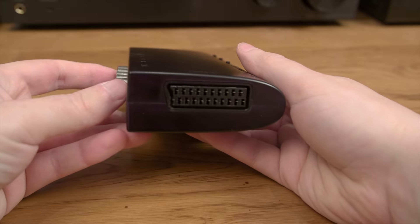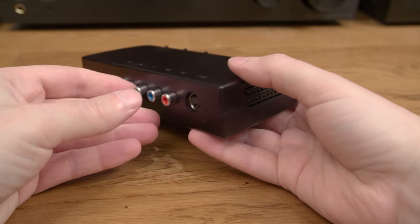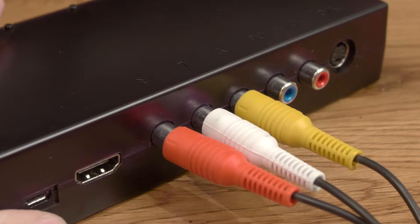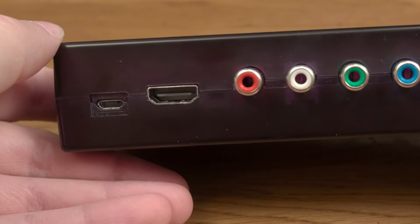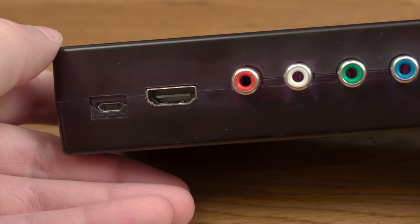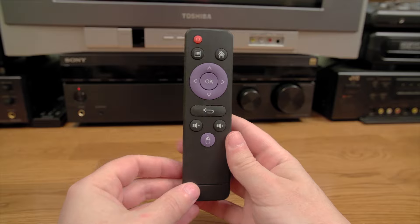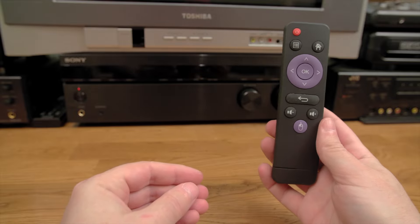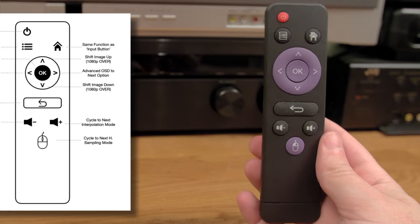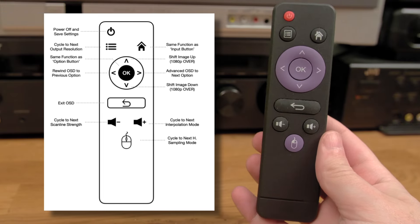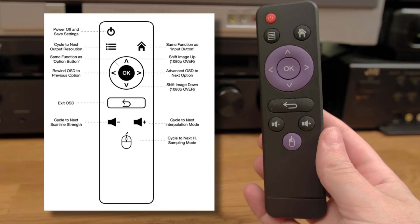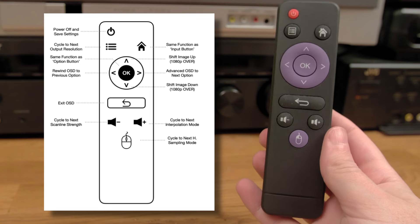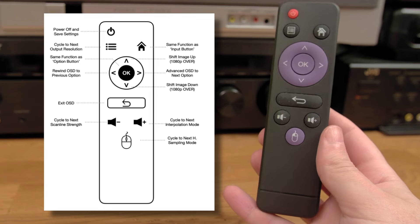For inputs, it features RGB Euro SCART, component, S-Video, and composite — which plugs into the green jack all by itself. Output, of course, is via HDMI. It comes with a generic remote with a bunch of buttons that mean absolutely nothing when you first look at them, but soon you'll learn what each button does. I'm sure some kind individual will make a nice overlay in the future. I'm glad the remote is included. Anyway, the output quality of the RetroTINK 5X is excellent. It really is.